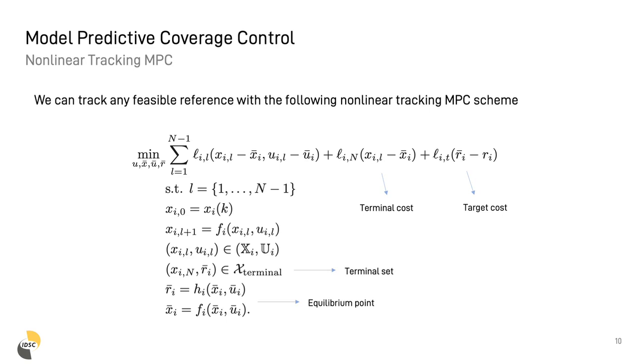To control a single agent, we make use of a nonlinear tracking MPC setup as follows. We minimize a stage cost function that is formed by three terms: a stage cost, a terminal cost, and a target cost. The stage cost penalizes state and input. Usually, this cost is chosen to be quadratic. I will talk in just a minute about the two other terms in the cost function.